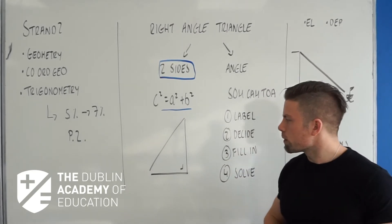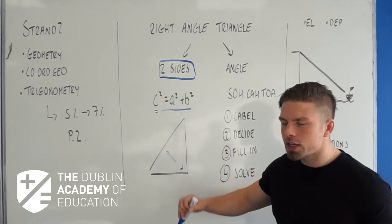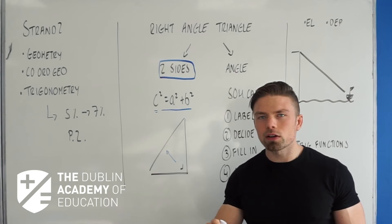The only issue that students can sometimes have is not knowing what C is. C is always the side directly across from the right angle in that triangle.